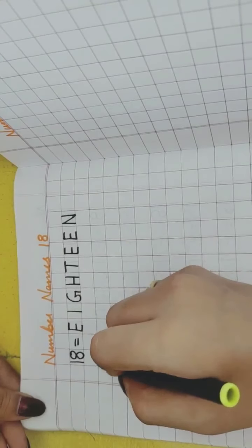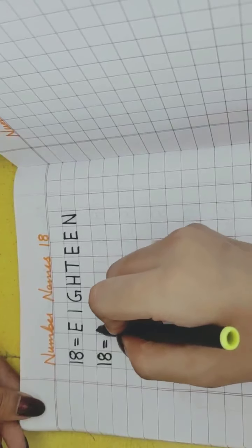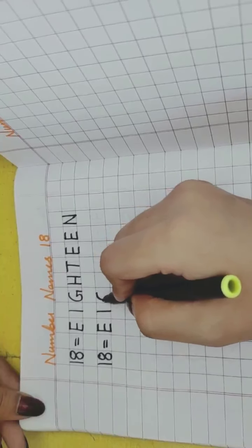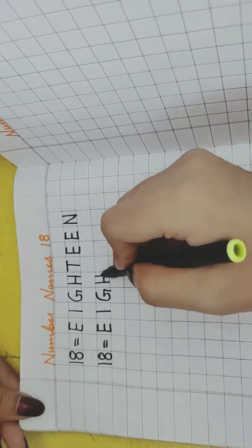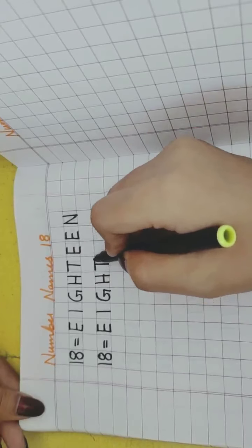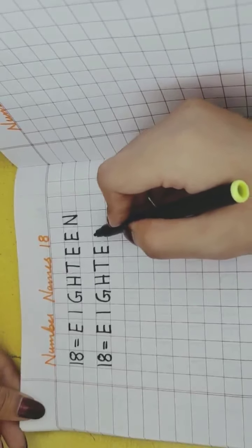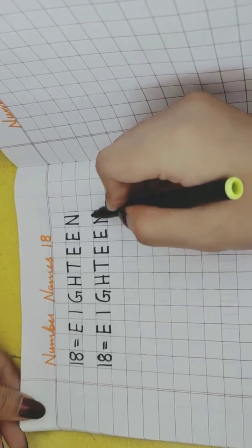Now again, one, eight, 18. E, I, G, H, T, E, E, N.